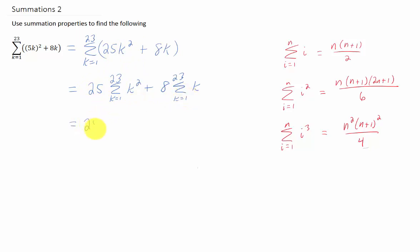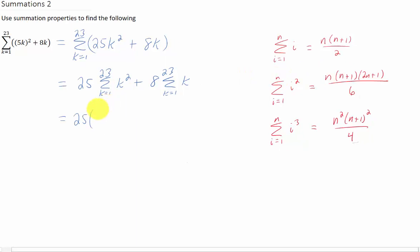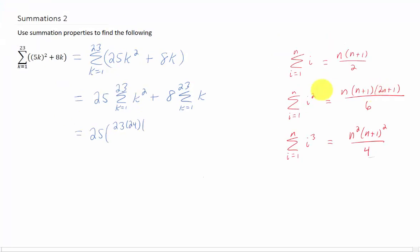Now it's time to use our formulas. Here we have a sum of our dummy variable squared — that is this formula right here. Our upper limit of summation is 23, so n is 23. We're going to get the sum of 23 times 24 — that's n times (n plus 1). And 2n plus 1 with n equals 23 is 46 plus 1, which is 47. All over 6.